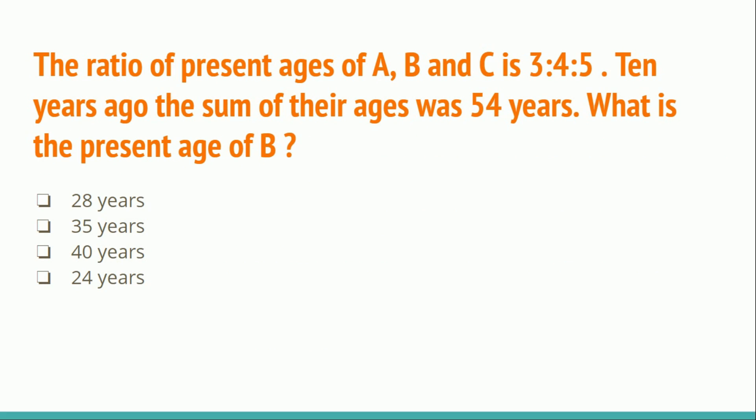The next question: the ratio of present ages of A, B, and C is 3:4:5. Ten years ago, the sum of their ages was 54 years. What is the present age of B? The options are 28 years, 35 years, 40 years, or 24 years.